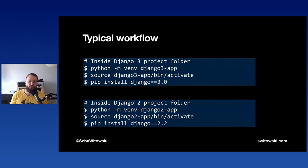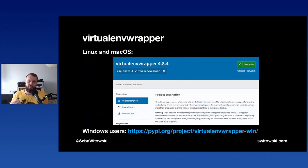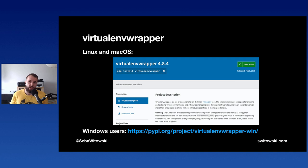A typical workflow involves creating one virtual environment per project. For our two Django projects: create one venv, activate it, install Django 3, work on it; create another venv, activate it, install Django 2.2, work on the other project. The venv module is perfectly fine for this, but I want to show you another tool called virtualenvwrapper, which has a lot of cool extra features. You can install it with pip; it works on Linux and macOS, and there's a virtualenvwrapper-win for Windows.